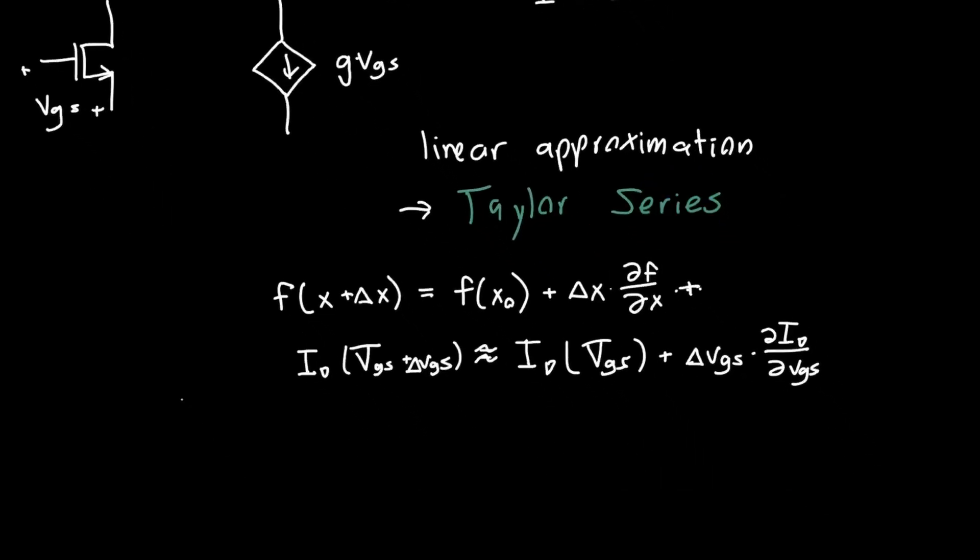But we actually have, and then there's going to be some additional terms here, right? But we're going to ignore them. But we can find this. We know the drain current as a function of VGS. It's just one half times Kn times (VGS - VT)². And if we differentiate this, dID/dVGS, we just get Kn times (VGS - VT).